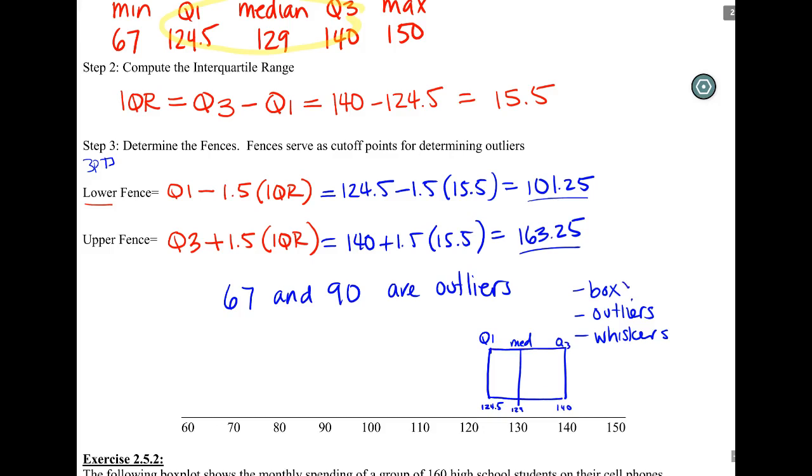Next step, we're done with our box, now is to do the outliers. We said 67 and 90 were outliers. So we're going to mark both of those about midway through the box. We're going to do an open circle at 67 and at 90. So these are our two outliers. 67 is still our minimum value even though it's an outlier. It's still the true minimum.